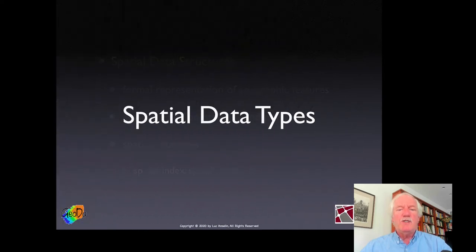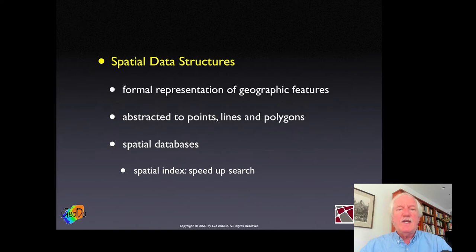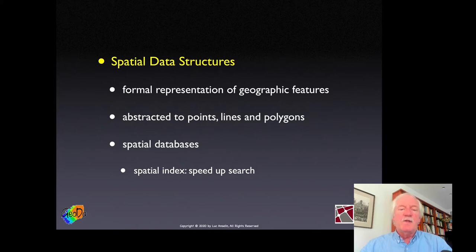Spatial data types are basically formal representations of geographic features, called a data structure in spatial analysis lingo. In essence, any geographic feature becomes abstracted to points, lines, and polygons. And these points, lines, and polygons need to be stored in a particular way.